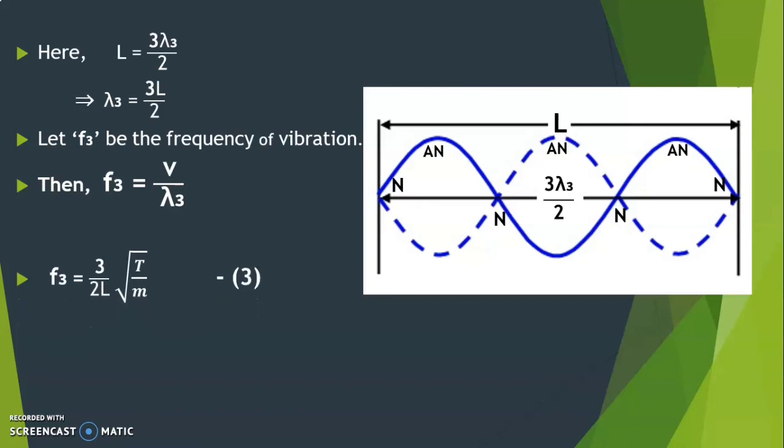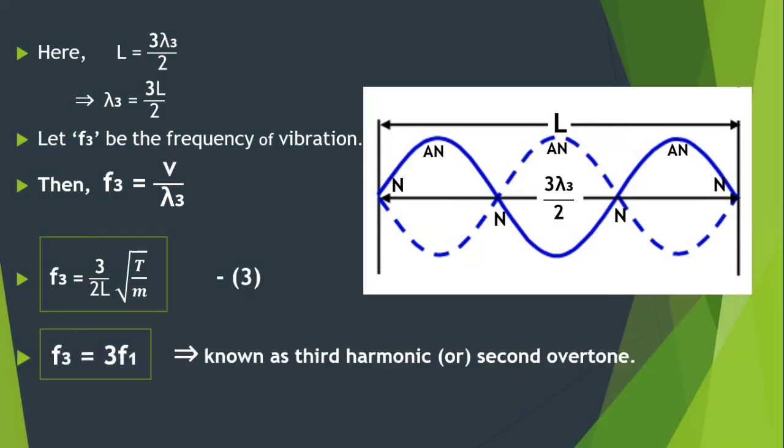Substituting the value of v and lambda 3, we get f3 equals 3 by 2L times root T by m, which is our third equation. This can also be written as f3 equals 3f1. This is known as third harmonic or second overtone.